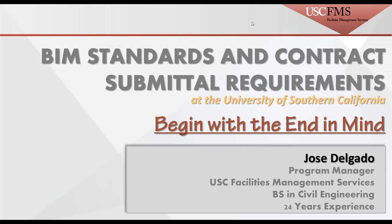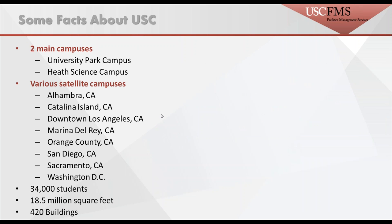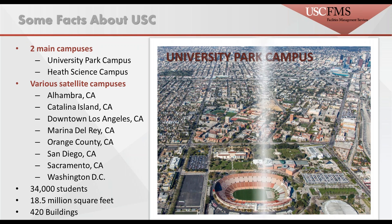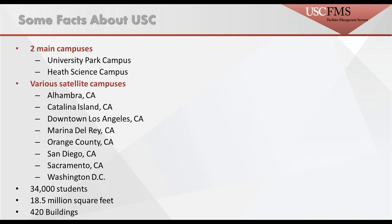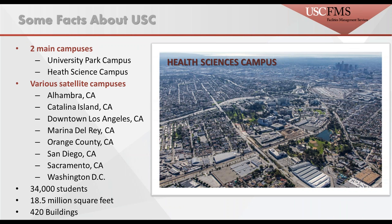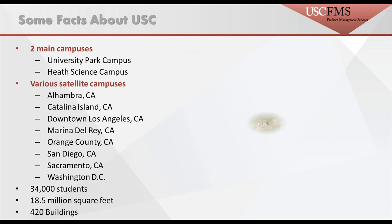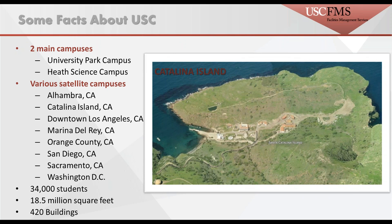Finally, I want to say that these are not new ideas — we probably borrowed from others out there. Some information about the university: we have our University Park campus, about two miles south of LA; our Health Sciences campus, about two or three miles northeast of LA; and our Catalina campus, about 26 miles off the coast of LA, with about 14 to 15 buildings out there. In total, we have about 420 buildings and about 18.5 million square feet. It's a private university, founded in 1880.